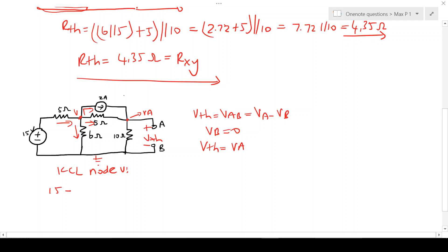KCL node V: 15 minus V over 5 equals V minus 0 over 6 plus 2 plus V minus VA over 5.